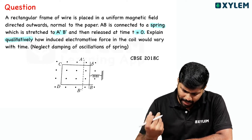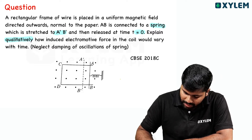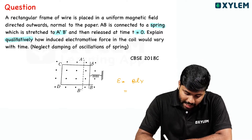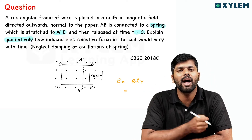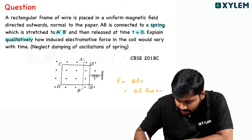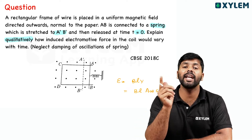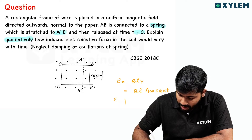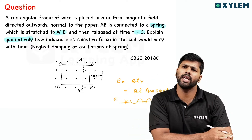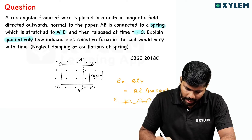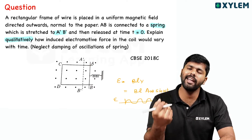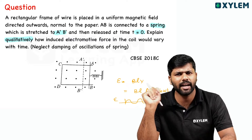The induced EMF equation here is E = BLV. Since AB is undergoing simple harmonic motion, the velocity is v = Aω sinωt. Therefore, EMF = BLA·ω·sinωt. Which means the EMF will be oscillatory — it will be a sinusoidal function — meaning the EMF will be an AC signal. The direction also changes accordingly.